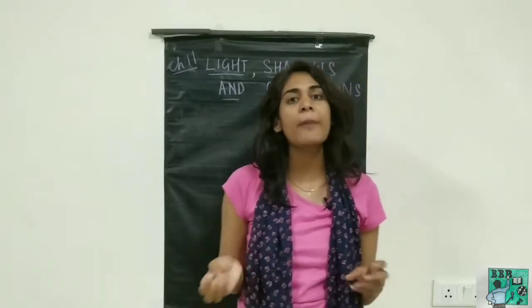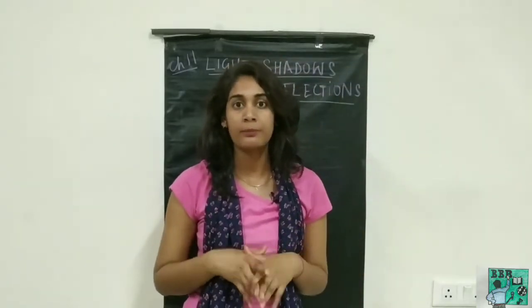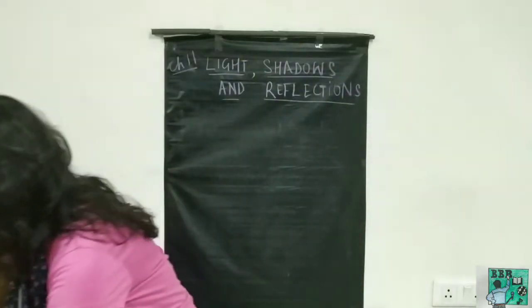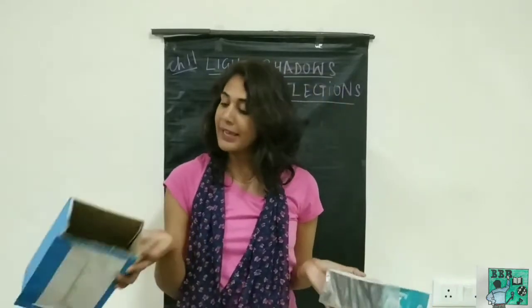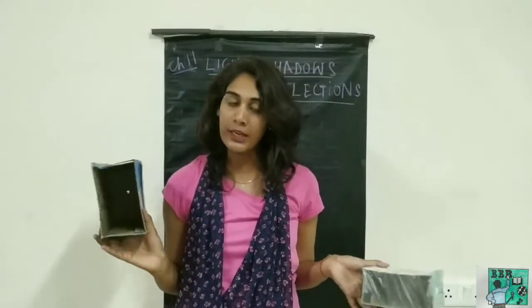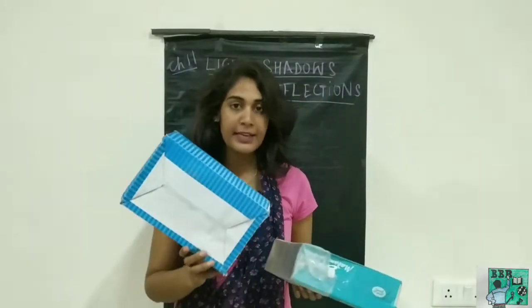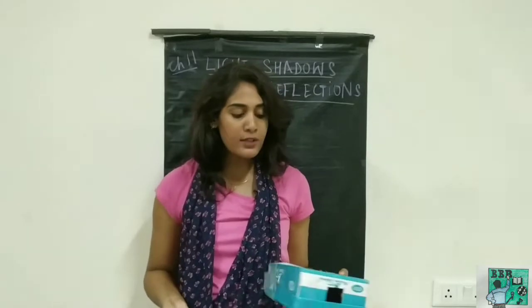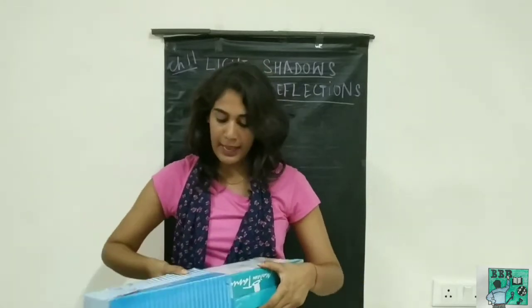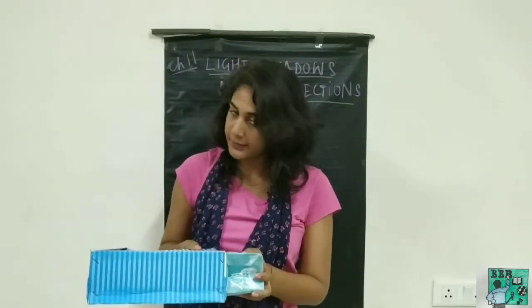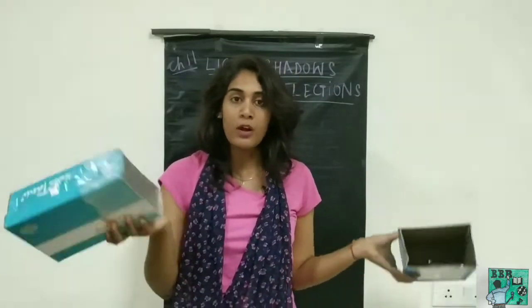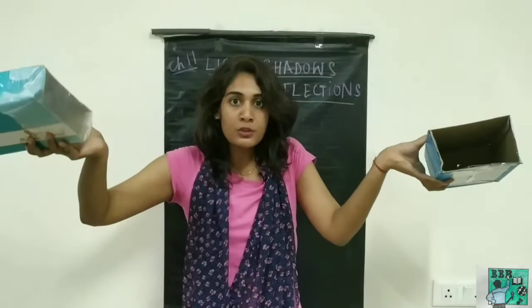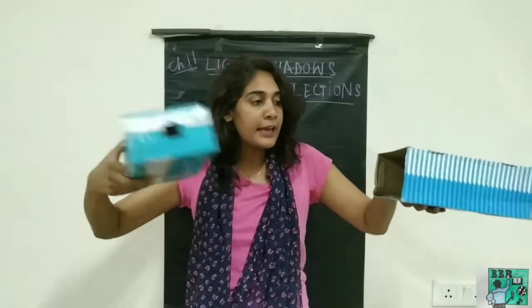There are cardboard boxes in your house — you collect them. We have two boxes. From one side of each box, we will cut it open — you can see we have cut from one side. One box is left as it is. Now, what we have to do is close the open end of the other box — keep the open end on one side.